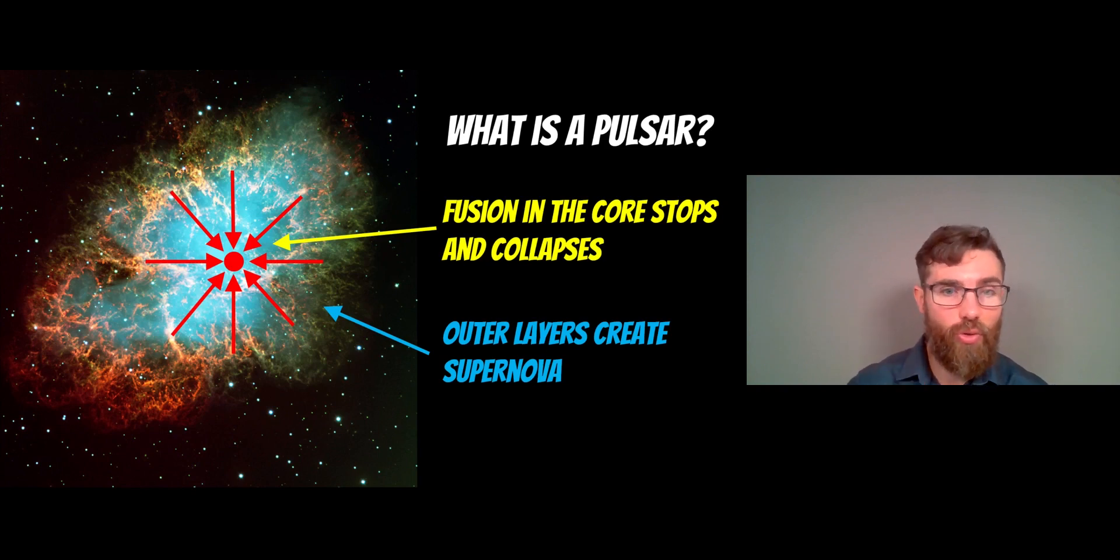Here you've got the Crab Nebula, and there is a pulsar at the center of that. The outer layers is what we see as the supernova, and it leaves behind a stellar remnant in the center, which is the core which would have ceased fusion and collapsed.